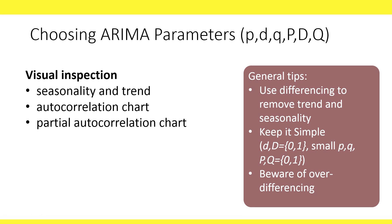A few general tips: use differencing to remove trend and seasonality, keep the model as simple as possible by differencing at most one time, choosing low values of small p and q, and setting capital P and Q to zero or one. Over-differencing can cause quite a bit of trouble, so beware of performing more than the necessary differencing operations.